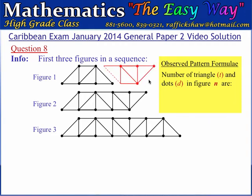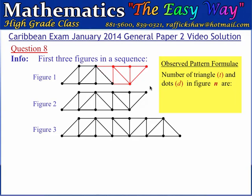A trapezium with the same dimensions as the first figure is added to form the second figure, and the trapezium that is added will have four triangles as well. So we start with four triangles in the first figure and add four triangles for each subsequent figure. We can see that four additional triangles are added and four dots are added to form each subsequent figure. Therefore, the number of triangles in figure N will be 4N.